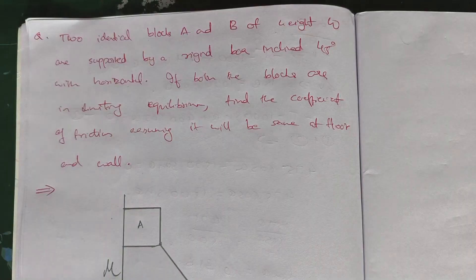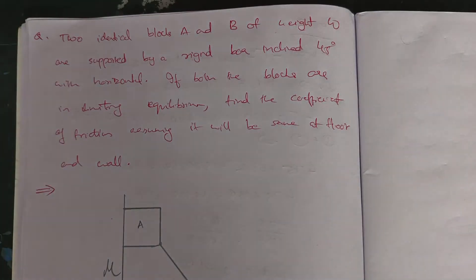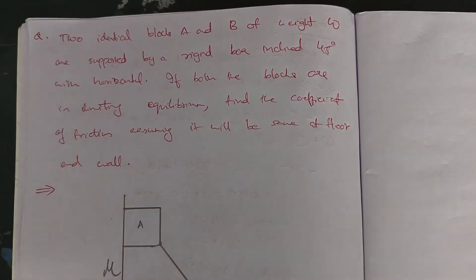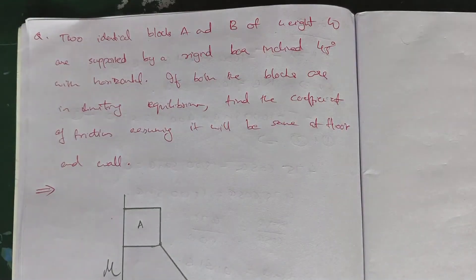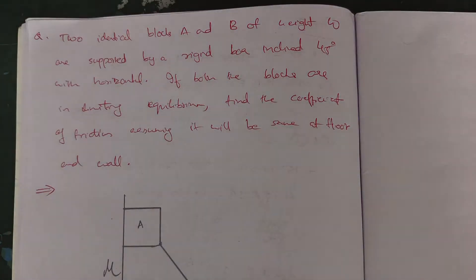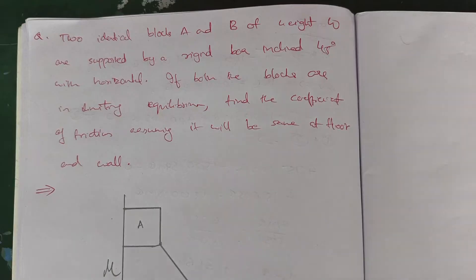Hi friends, welcome back. Connected bodies, friction, third question. Two identical blocks A and B of weight W are supported by a rigid bar inclined at 45 degrees with the horizontal. Both the blocks are in limiting equilibrium. Find the coefficient of friction, assuming it is the same for the wall and the floor.